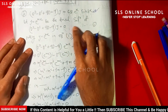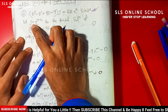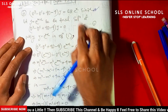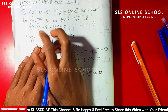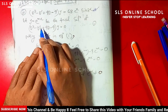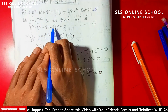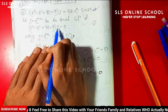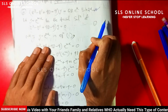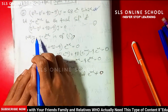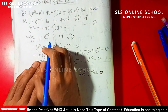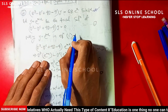As usual, let y equal to e to the power mx as the trial solution. So D-cube minus 3D-square plus 4D minus 4 into y is equal to 0 — this is equation 1. Putting y equal to e to the power mx in equation 1.